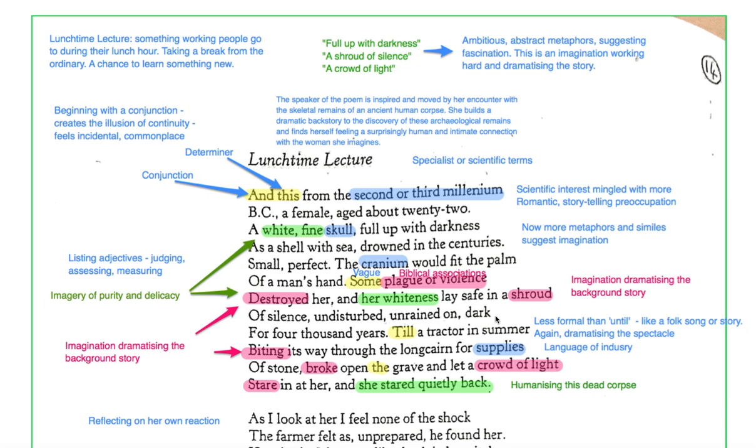She's, you can see, this list of details here, you can kind of feel her struggling to understand this length of time. It's impossible for us to imagine that period of time really, we can't really have any comprehension of it because we're here for a much shorter period than that. So this listing of details, undisturbed, unrained on, dark for 4,000 years, is suggestive of her struggle to understand that period of time. And again, she's engrossed, she's interested in this lecture and this person that she feels she's been introduced to across this enormous time span.